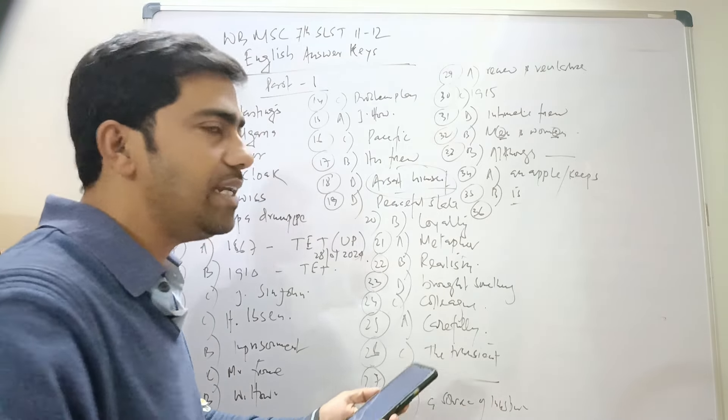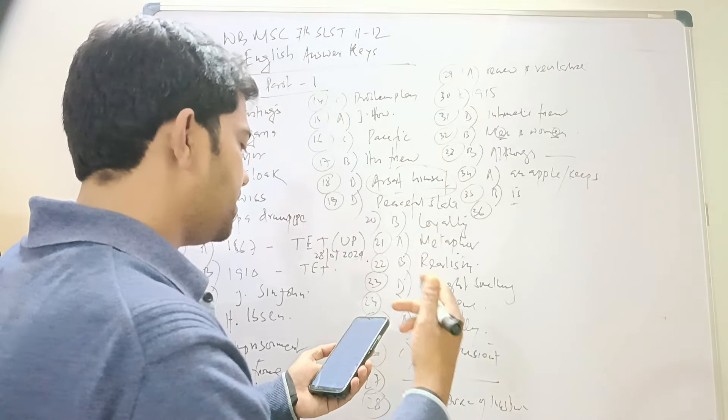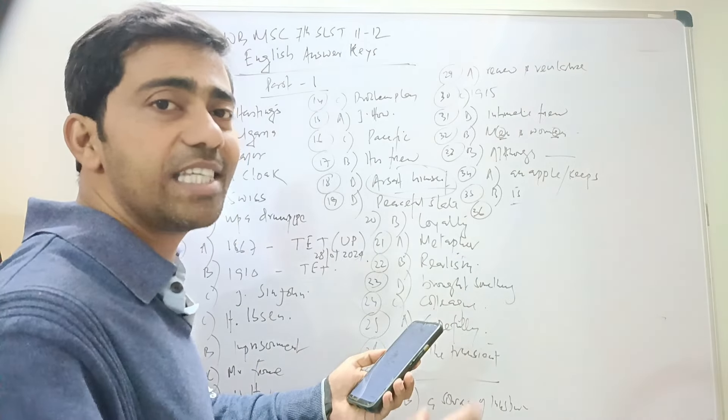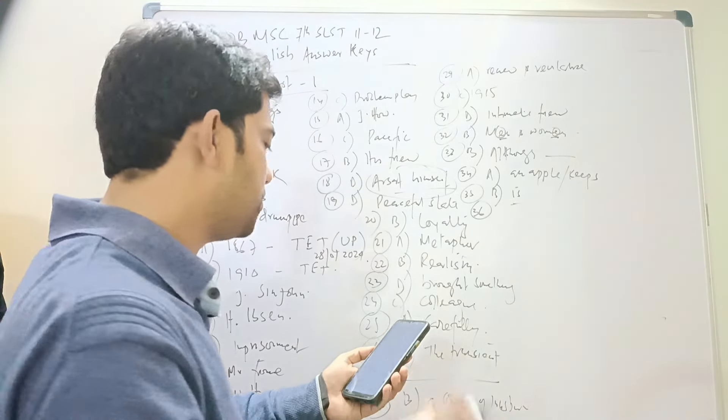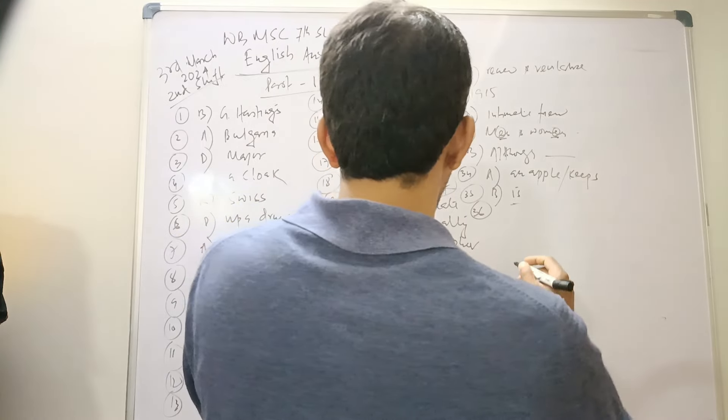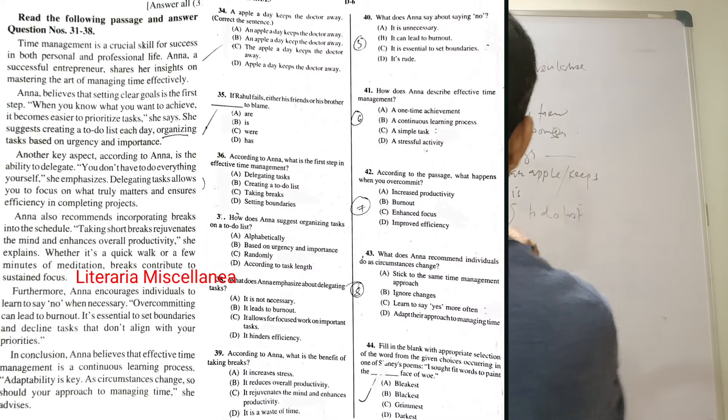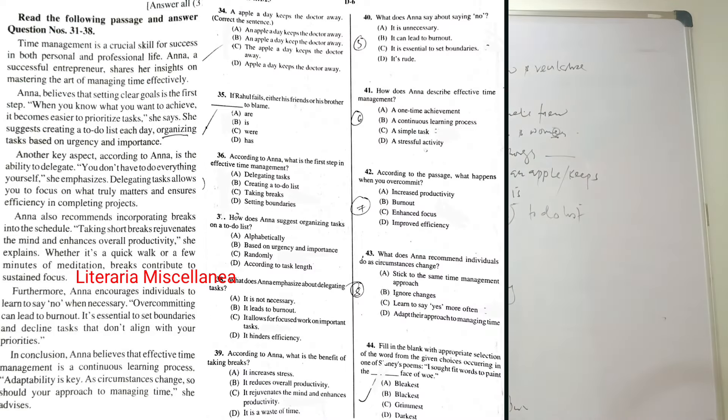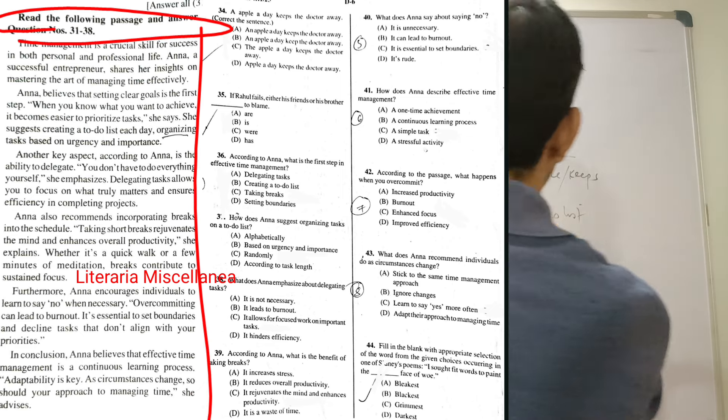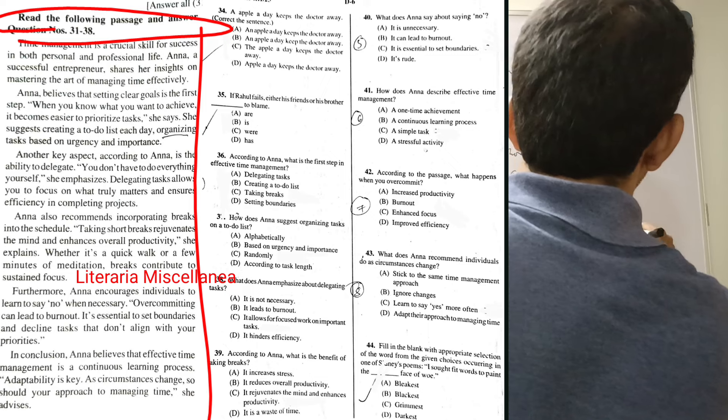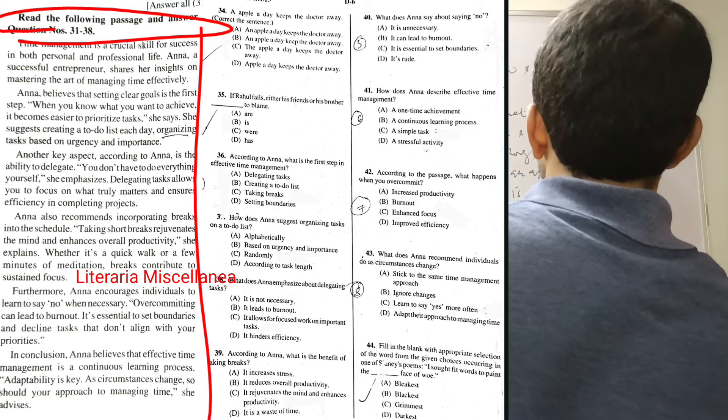According to Anna, what is the first step in effective time management? Creating a to-do list, B. You can see in your screen the passage. Thirty-seven: How does Anna suggest organizing tasks on a to-do list? Based on urgency and importance, B.